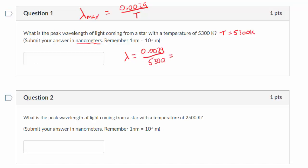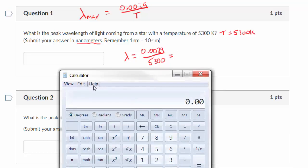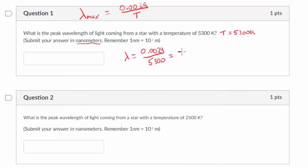Okay, I'm going to put that in a calculator. 0.0029 divided by 5300, and I get 5.47 e minus 7. So this is 5.47 times 10 to the minus 7 meters. Oh, 5.47, that's really important.